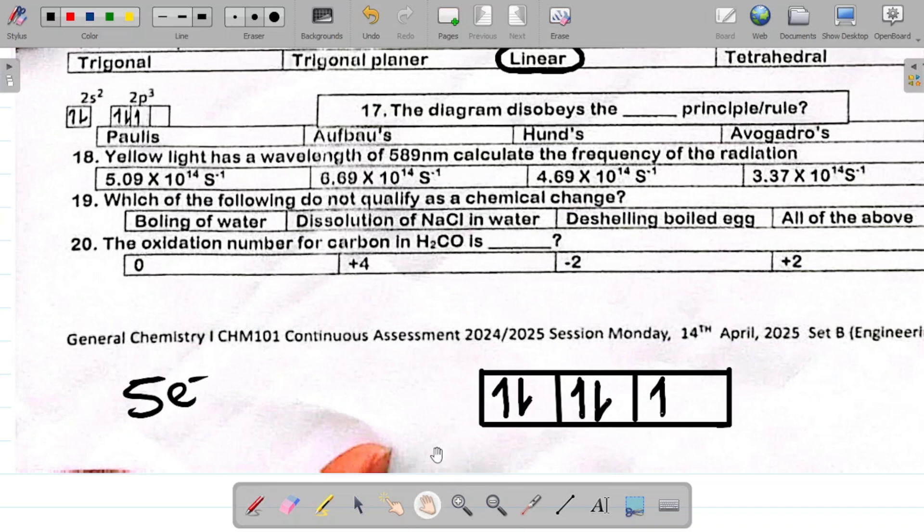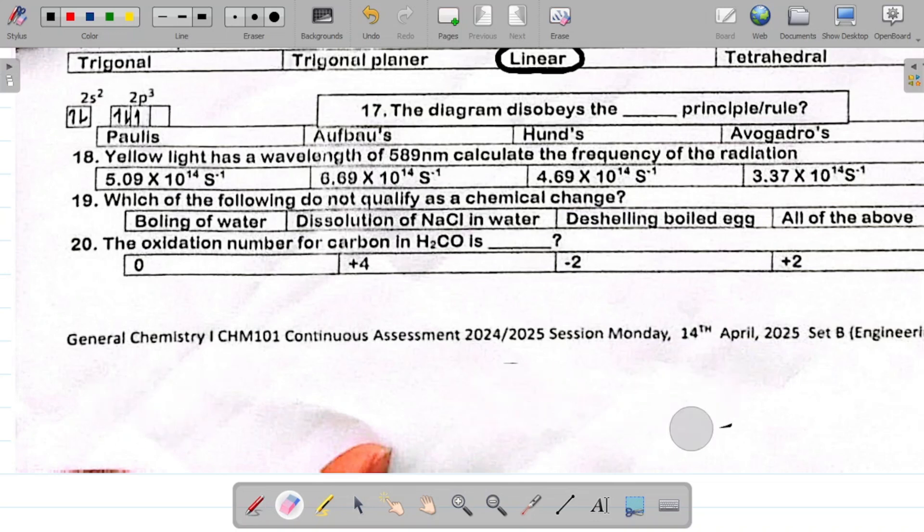But if you look at the question there, we now have something that looks like this. What do you observe? This is what the question looks like. Observe that this one here was being paired even when this one was not filled up. So it disobeys Hund's rule. That's the concept. So the answer there is Hund's rule. So I'll come and I'll circle Hund's rule.